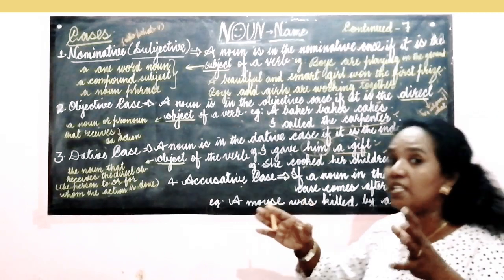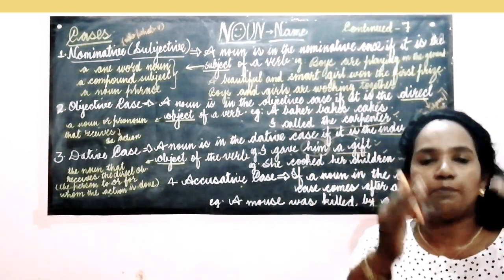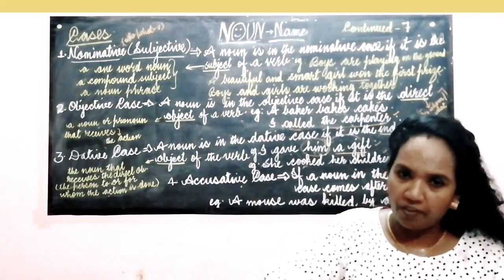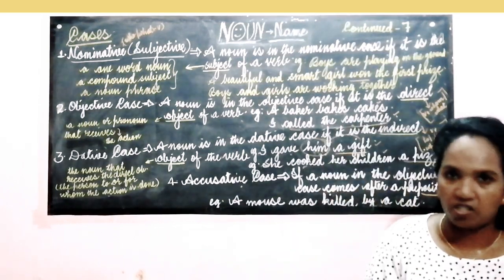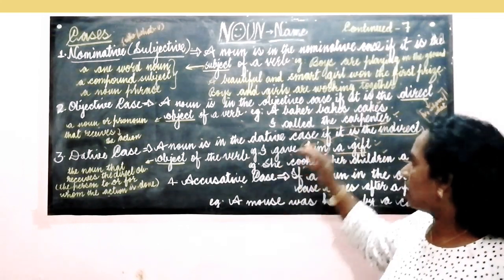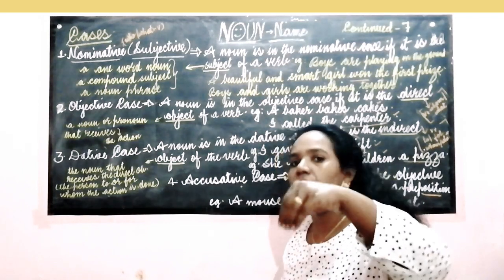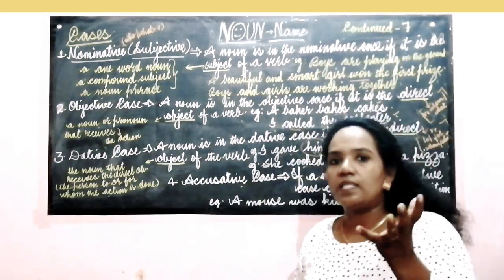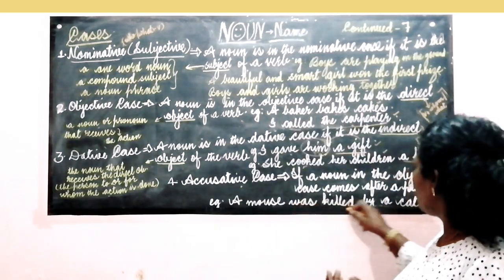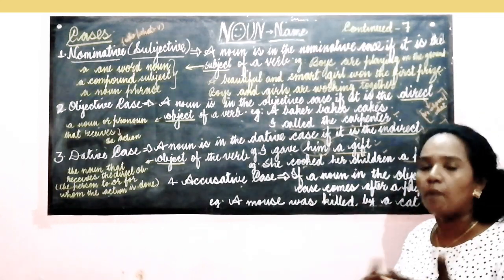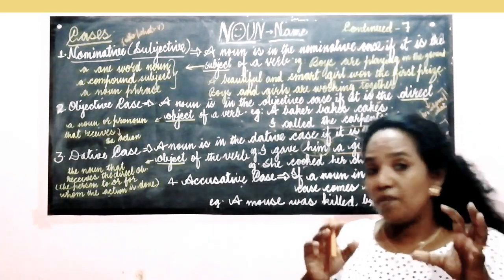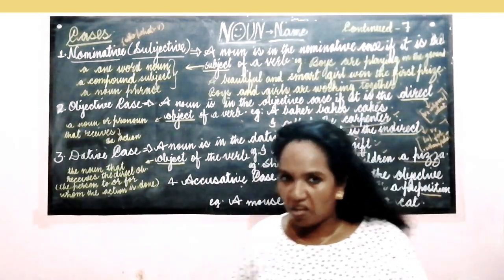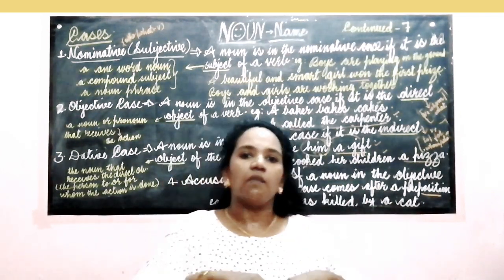It is important to understand that if it is a noun, the noun will never change whether it is in the subject's place or the object's place — it remains the same. The noun may not take a change in its form in the nominative case or in the objective case. But when we use pronouns, they change. For example: I called the carpenter. If the carpenter becomes the subject — The carpenter is called by me — the noun the carpenter remains as it is, but the pronoun I changed to me. That is, the subjective form I is converted to the objective form me.